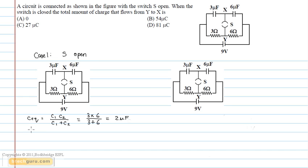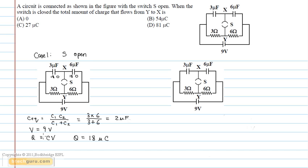We know that the total potential difference across the circuit is 9 volts. As Q is equal to CV, we find out that Q is equal to 18 microcoulombs, which is distributed in the following manner. So the total charge at the X terminal Q is equal to 18 microcoulombs.